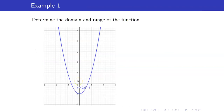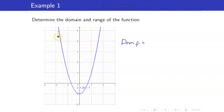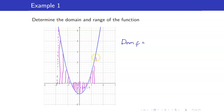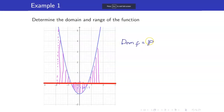For example, we want to get the domain and range of this function. First, let us get the domain of f. To get the domain of f, you have to project the points along the x-axis — you are getting all the x-coordinates of these points. When you do that, you will get the entire x-axis. Take note that this graph will continue to extend, so you will be able to cover the entire x-axis. Hence, the domain of f is the set of all real numbers.